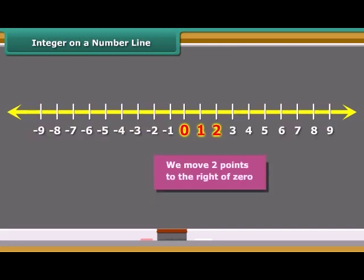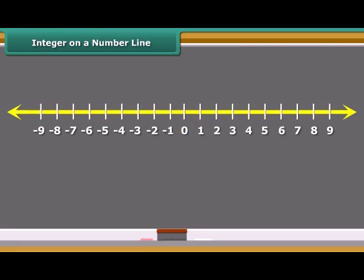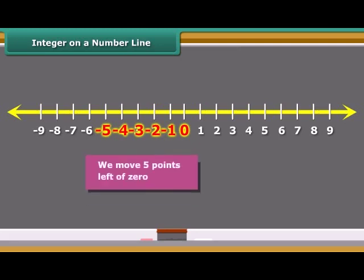Here to mark plus 2 on the number line, we move two points to the right of zero. Similarly, to represent minus 5, we move five points left of zero.